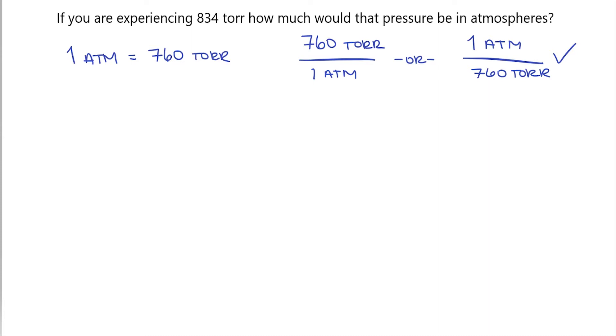Now let's proceed with the question. So we begin with our 834 torr. And now we use our fraction by saying for every one atmosphere, we have 760 torr.